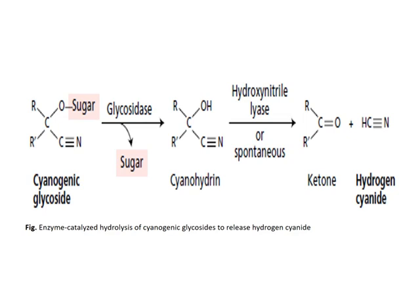For example, if R is phenyl, R' is a hydrogen, and the sugar is the disaccharide beta-gentiobiose, the compound is amygdalin — the common cyanogenic glycoside found in the seeds of almonds, apricots, cherries, and peaches. This slide shows how the hydrolysis process of glycosides occurs and hydrogen cyanide is released from these compounds.